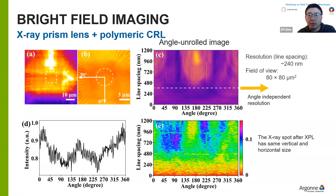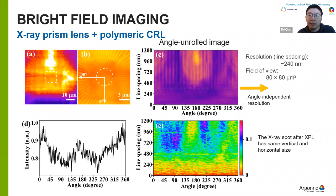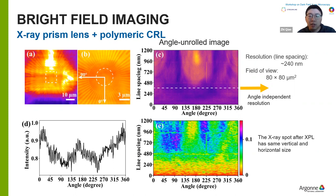Using the cross-correlation method to mitigate mechanical instability, we first tested the performance of bright field imaging of the x-ray microscope using the x-ray prism lens as condenser and the polymer lens as objective. The sample is a test pattern with the finest structure of 30 nanometers. We took about 100 images with 10 milliseconds each, then applied the cross-correlation method to correct the vibration. The corrected image shows the smallest line-spacing resolution of around 240 nanometers, with a field of view of around 80 micrometers. The angle-integrated image shows that the resolution is angle-independent and uniform across the full field of view.